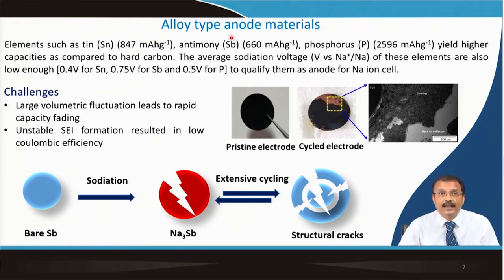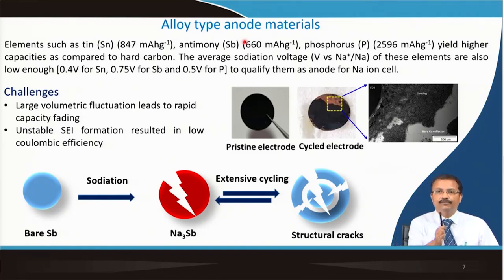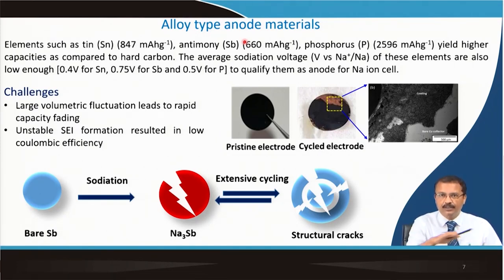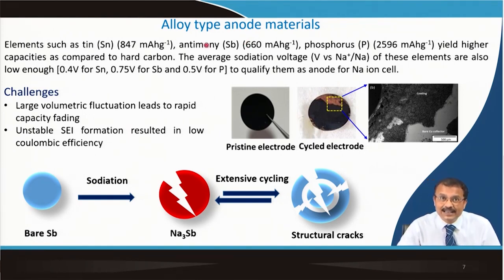For alloy-type anode materials, tin can be used because it forms an alloy with sodium just as it does with lithium. When alloying takes place, depending on the phase diagram, you look at what phases form. If there is a two-phase mixture at minimum free energy, the free energy remains the same and the voltage will also remain the same, giving you a plateau in the voltage profile rather than a sloping solid-solution response.